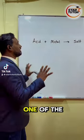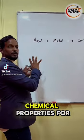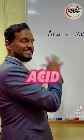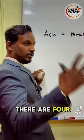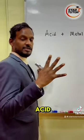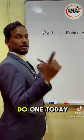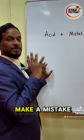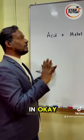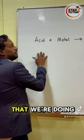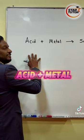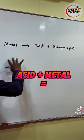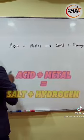Today what we are going to do is one of the chemical properties for acid. There are four chemical properties for acid. We are just going to do one today. This is one of the four that you guys usually make a mistake in. The one that we are doing today is acid reacting with metal to produce salt and hydrogen gas.